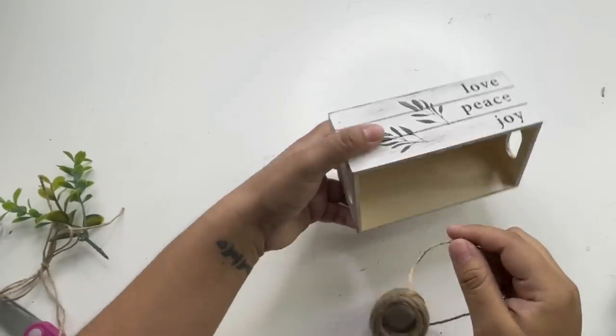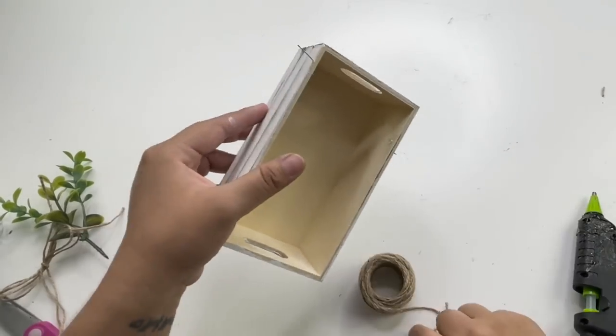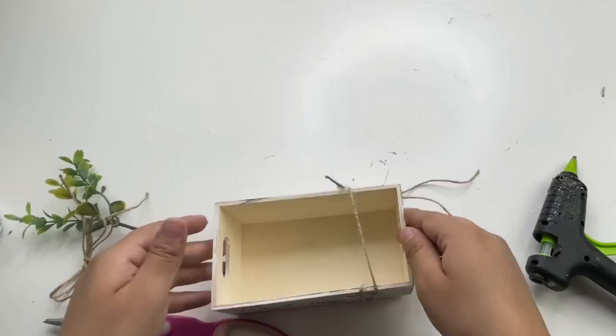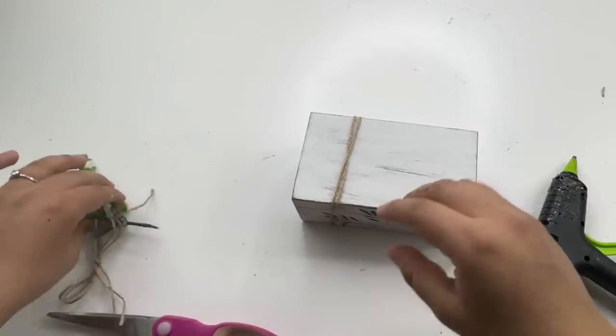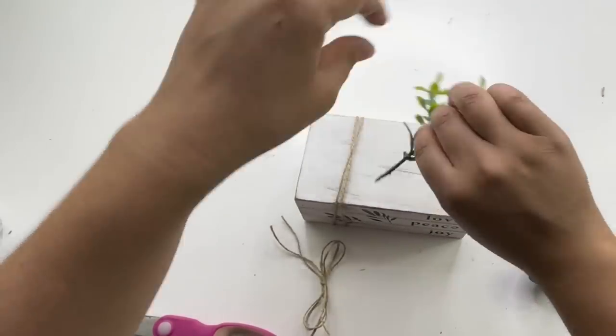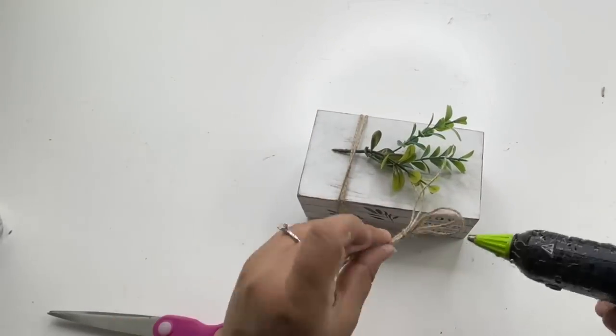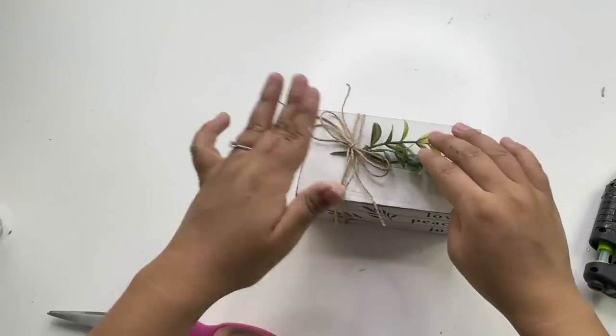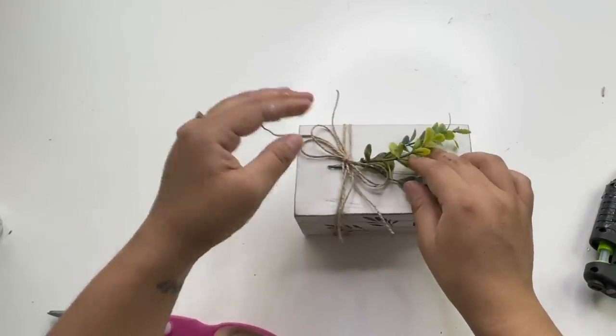To decorate this a little more, I will be adding some jute twine on the side and some greenery at the top with a jute twine bow. And that is it for these decorative books.